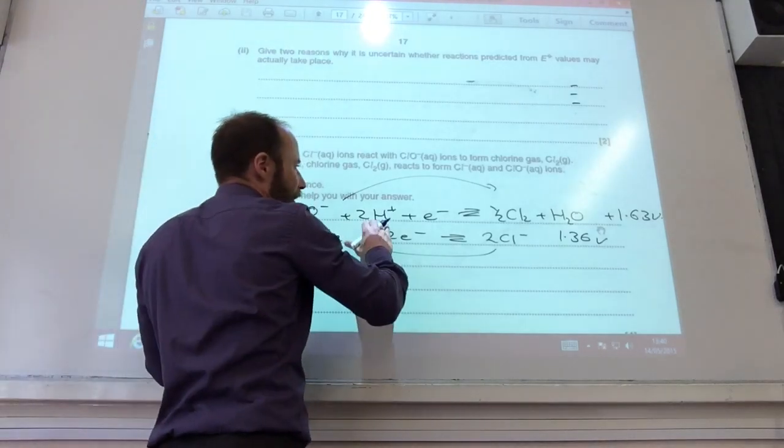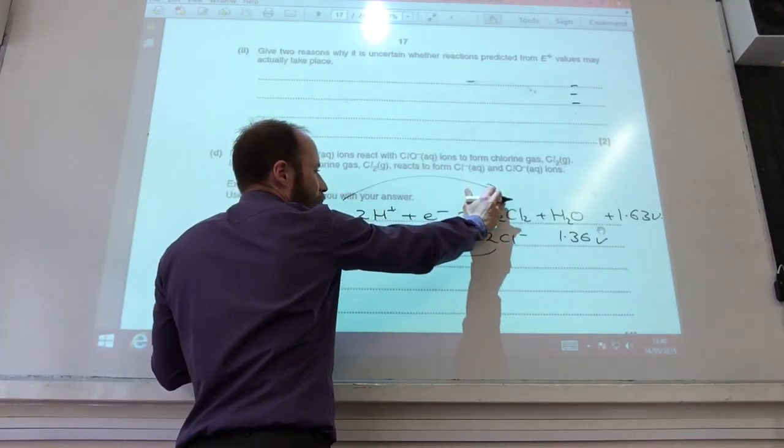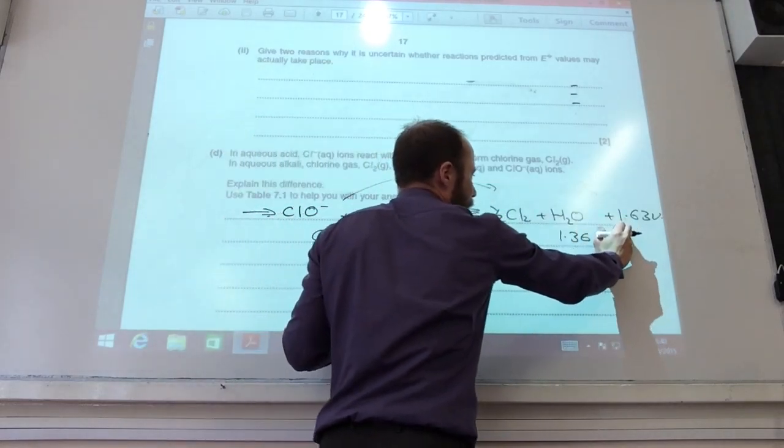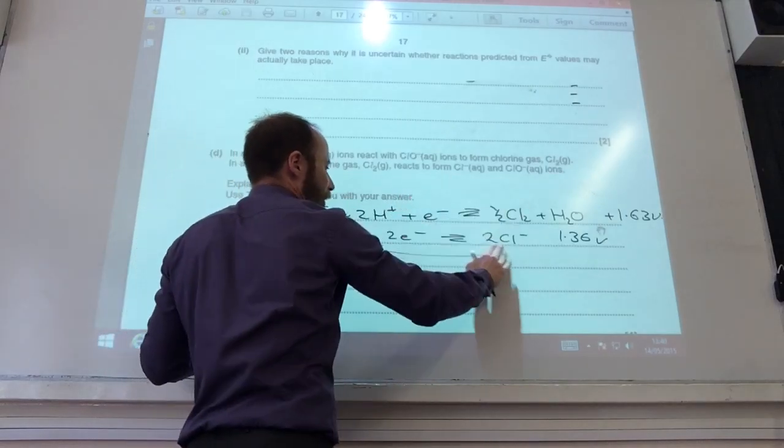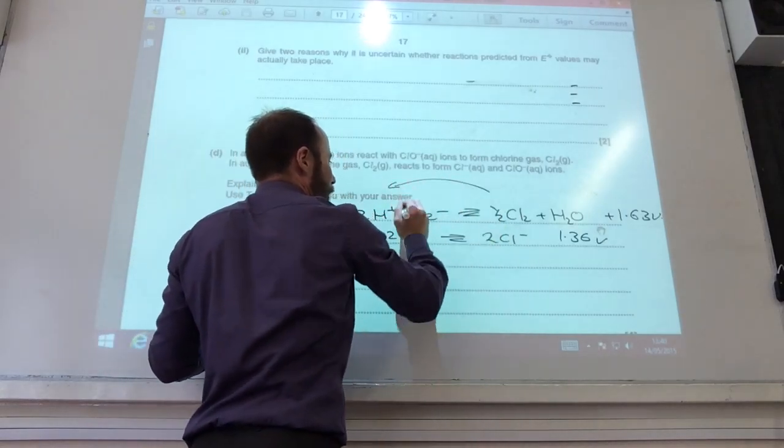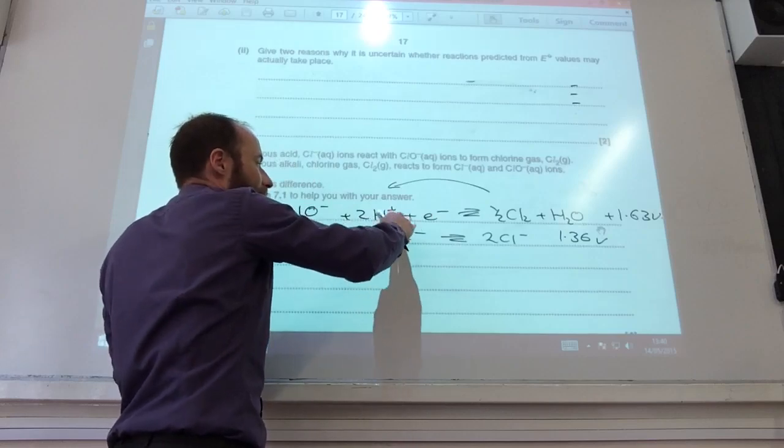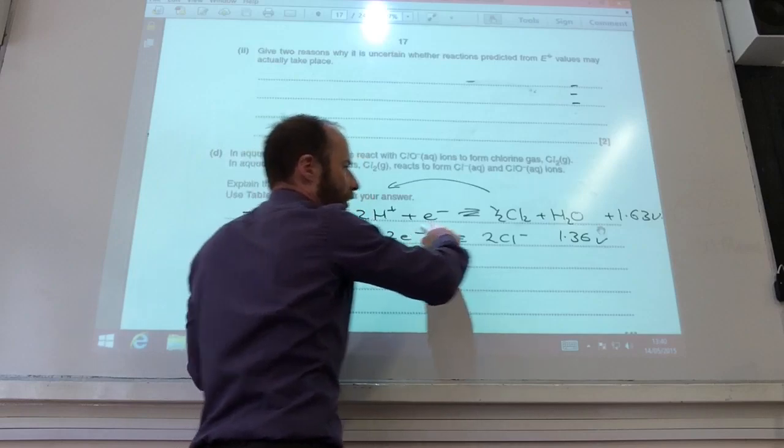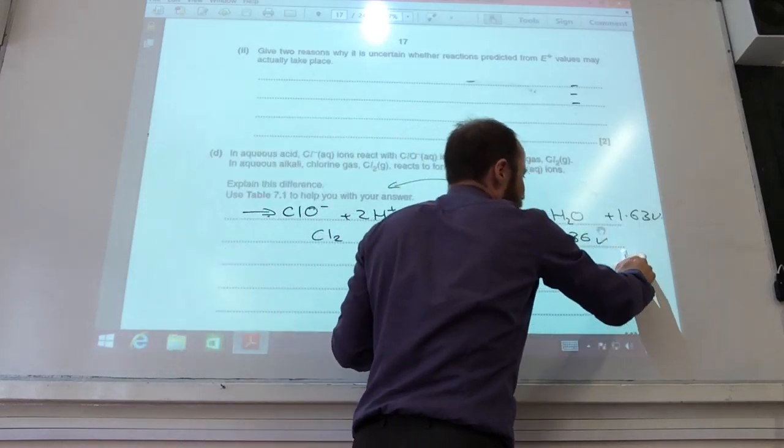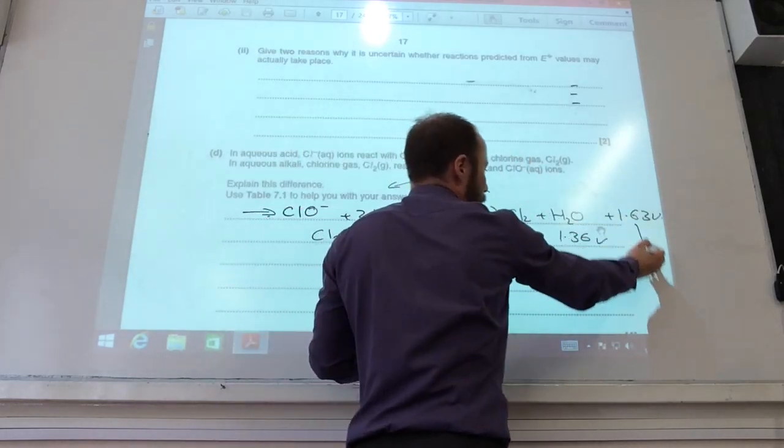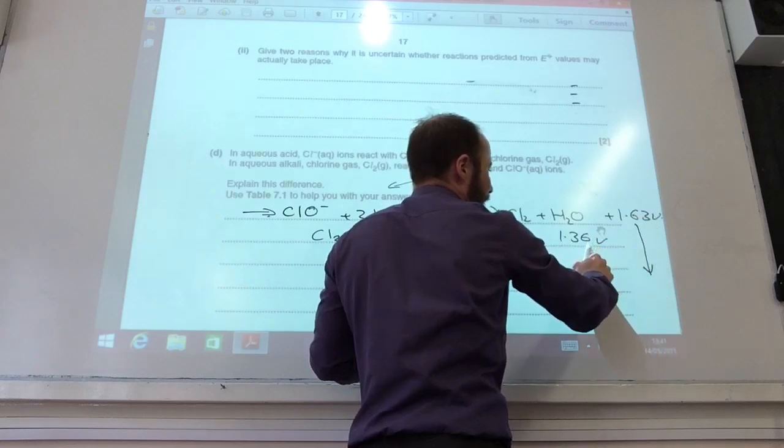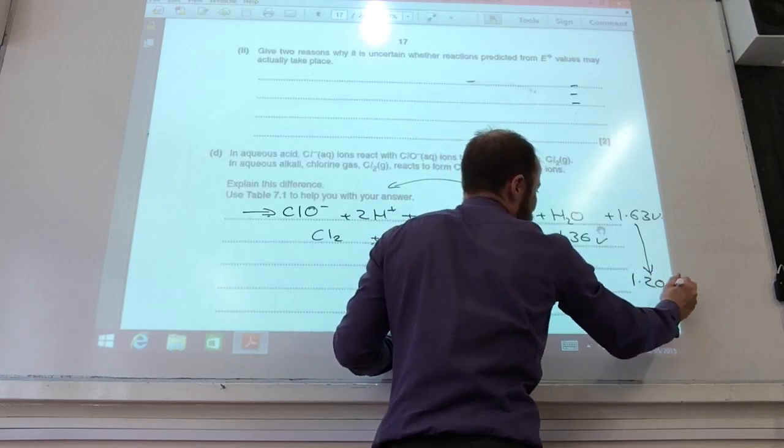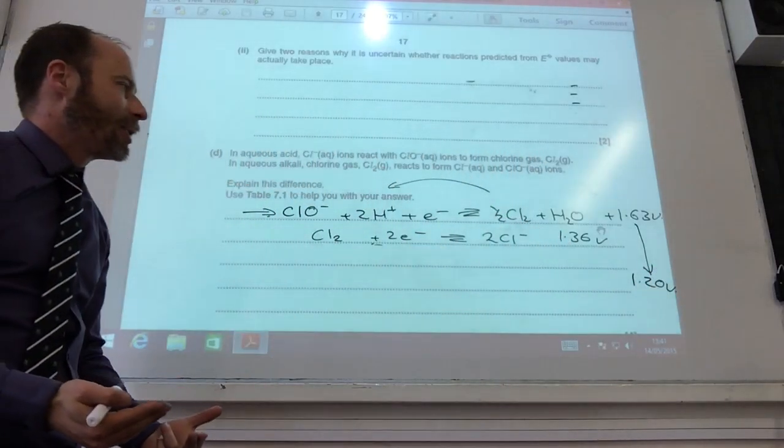In acid conditions, this equilibrium is going to be pushed to the right hand side. Less electrons on the electrode which makes this one more positive. However, in alkaline conditions, this equilibrium will be pushed to the left hand side because obviously it's removing acid. Fewer electrons on the electrode and this becomes more negative. And it could become more negative than the 1.36 volts. So this could end up being maybe, I don't know, let's go mad, 1.2 volts. And then the feasibility gets reversed.